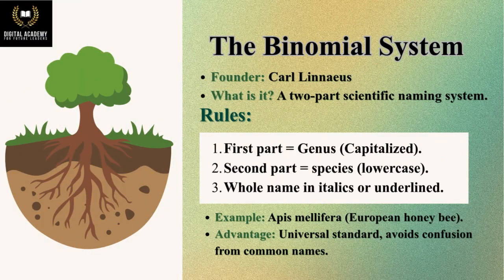The binomial system. Founder: Carl Linnaeus. What is it? A two-part scientific naming system. Rules: